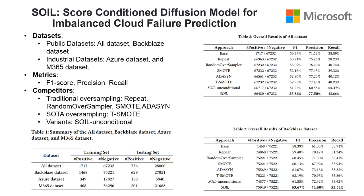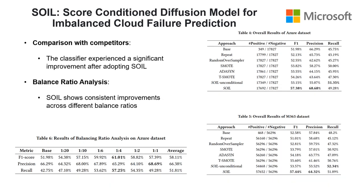We utilize four traditional sampling methods, one state-of-the-art sampling method, and an unconditional diffusion model as baselines. To investigate the impact of the conditional score in SAWYER, we compare it with an unconditional diffusion model referred to as SAWYER-unconditioned. From the experimental results, SAWYER demonstrated superior enhancement in model performance compared to other sampling methods. Additionally, we found that SAWYER exhibits a certain level of robustness, consistently delivering high performance across various imbalance ratios.